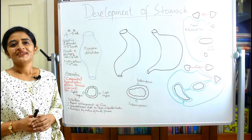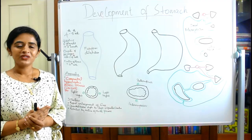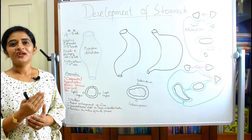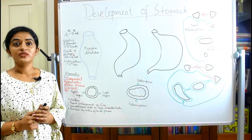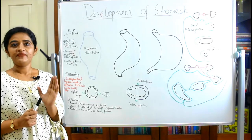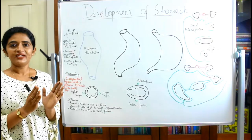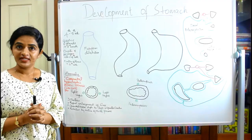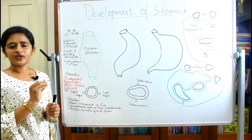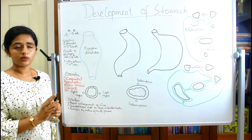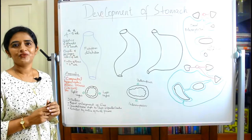Welcome back. This is a continuation of the development of the GIT series, so those who haven't seen the previous sessions should watch them first for continuity. In this session, we are going to see how the stomach is developed from the primitive gut tube. If you draw all the diagrams discussed here, you will score very good marks in theory exams.